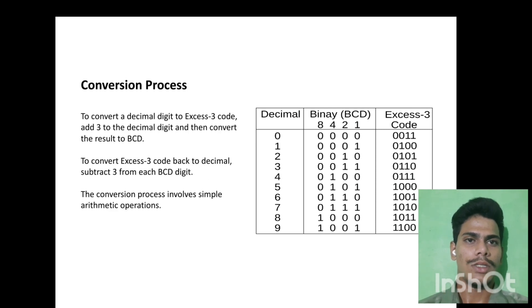Conversion process. To convert a decimal digit to XS3 code, add 3 to the decimal digit and then convert the result to binary BCD. To convert XS3 code back to decimal, subtract 3 from each BCD digit. The conversion process involves simple arithmetic operations.